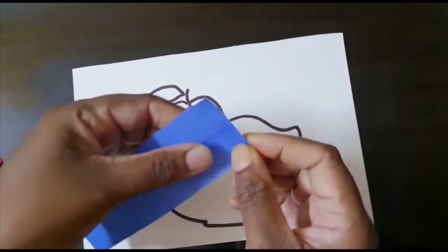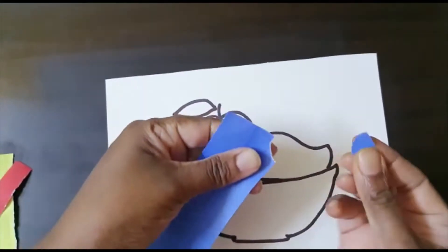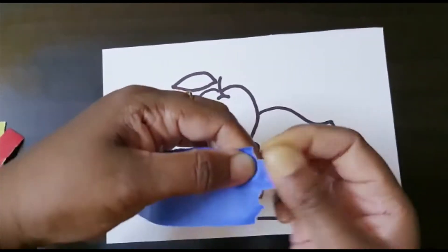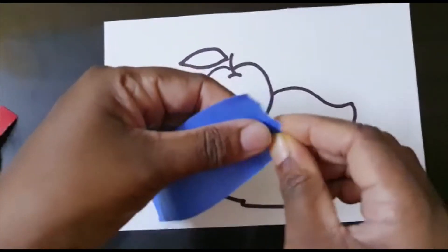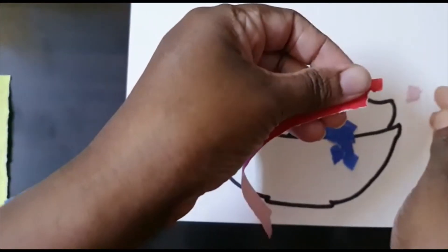We have to tear the paper like this into small pieces. We will be tearing it out like this, and the same way we will be tearing the other colors too.